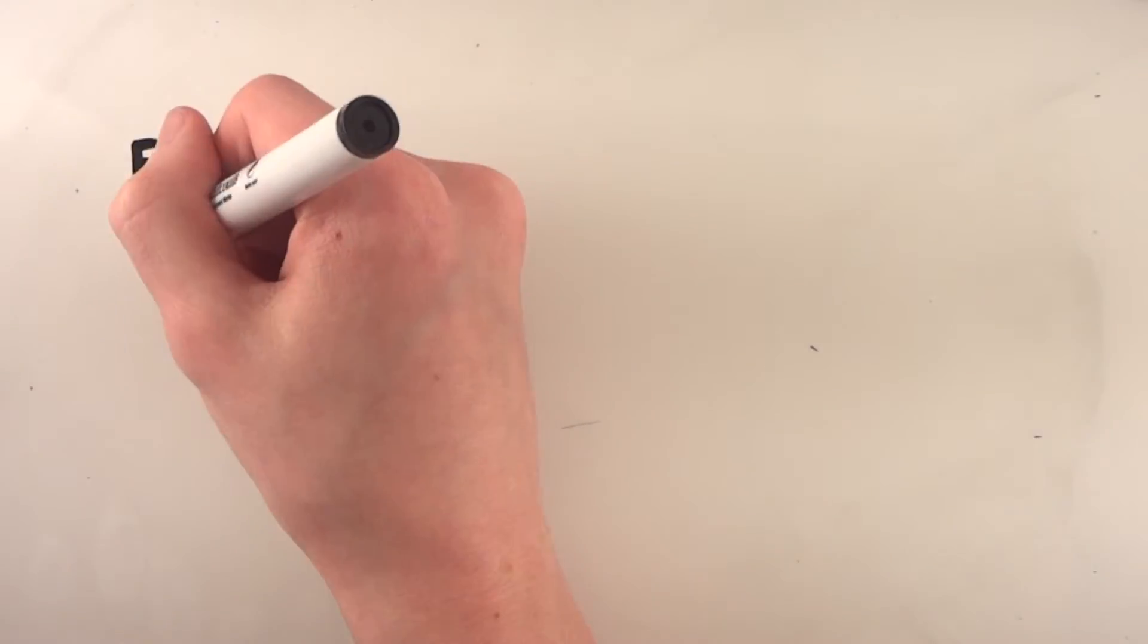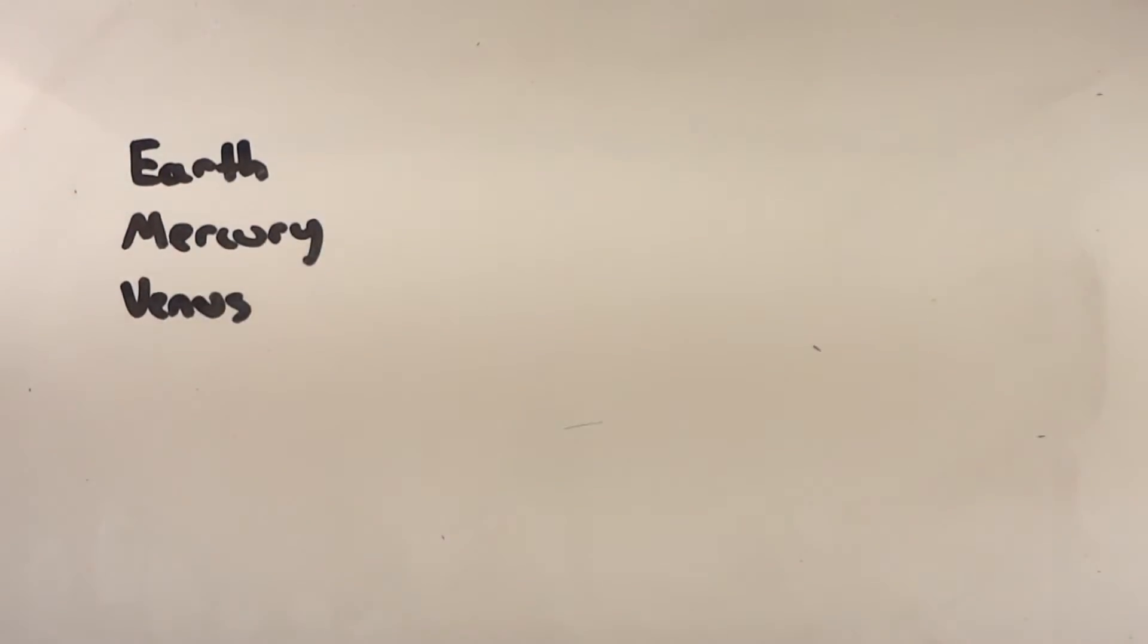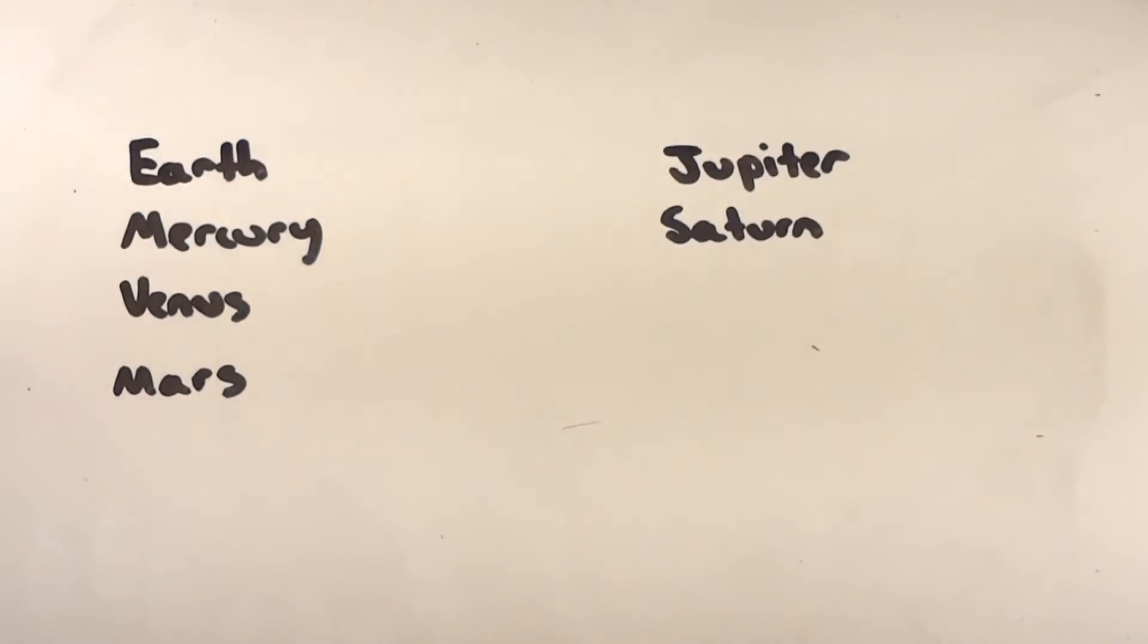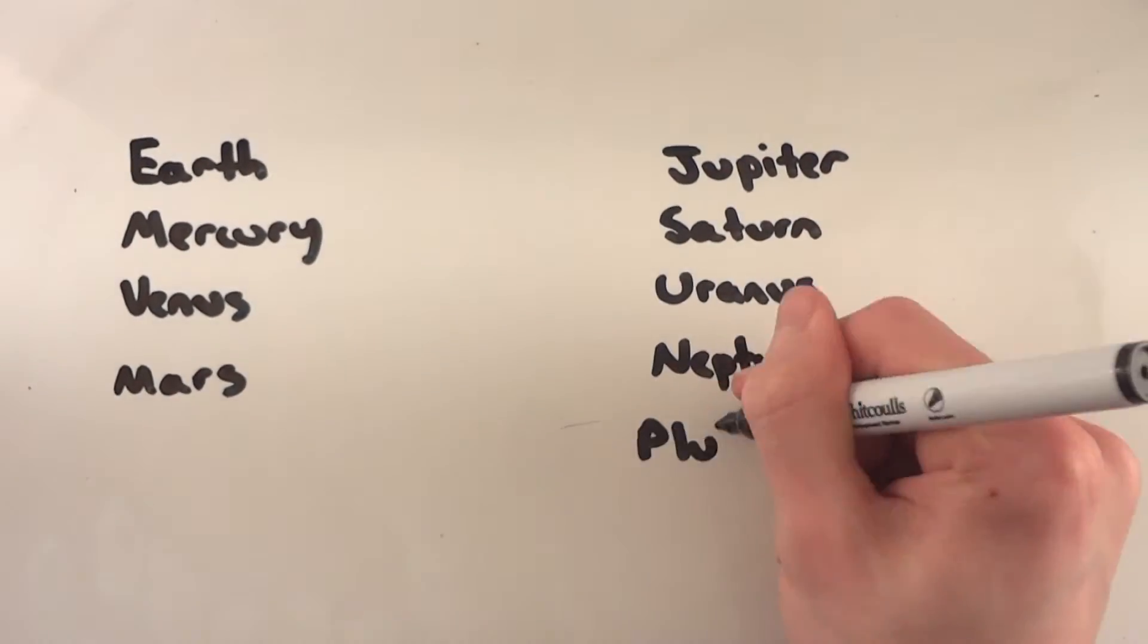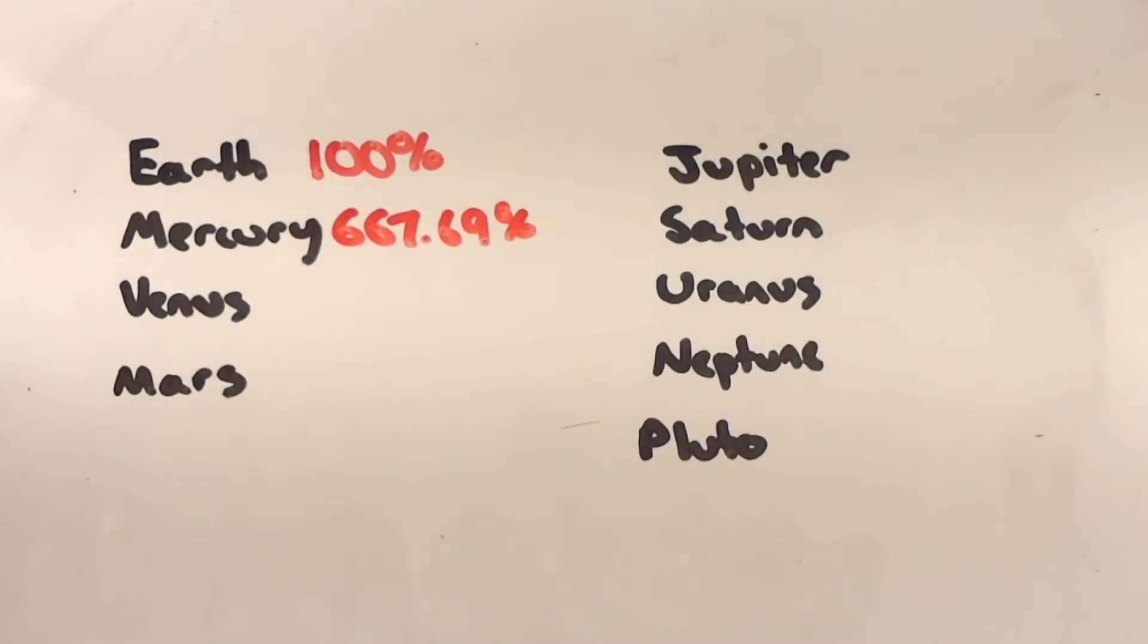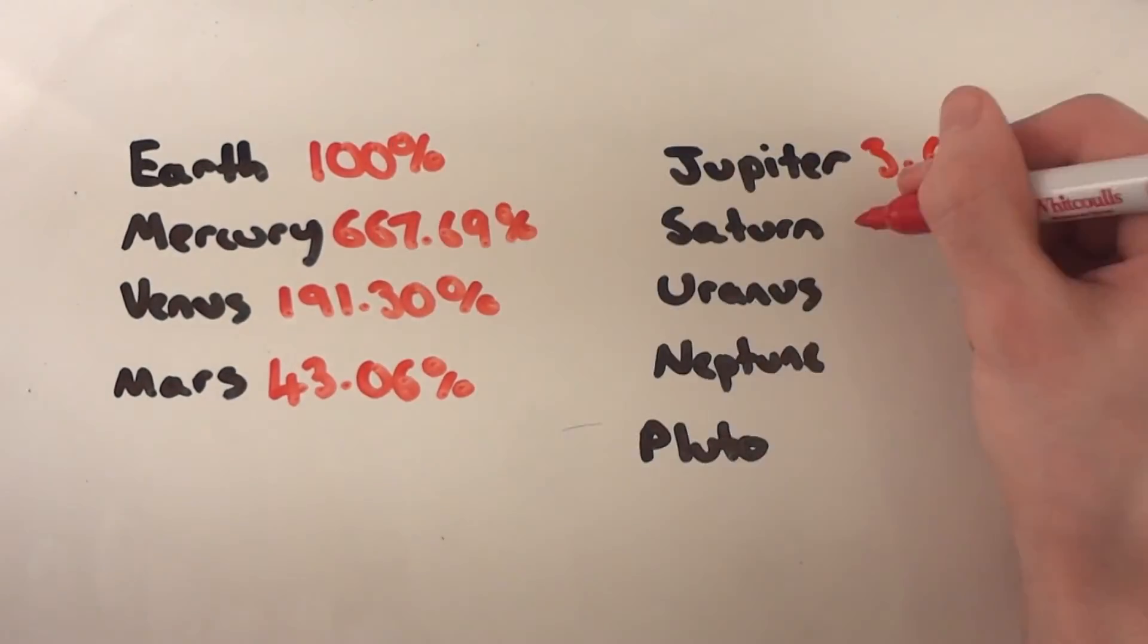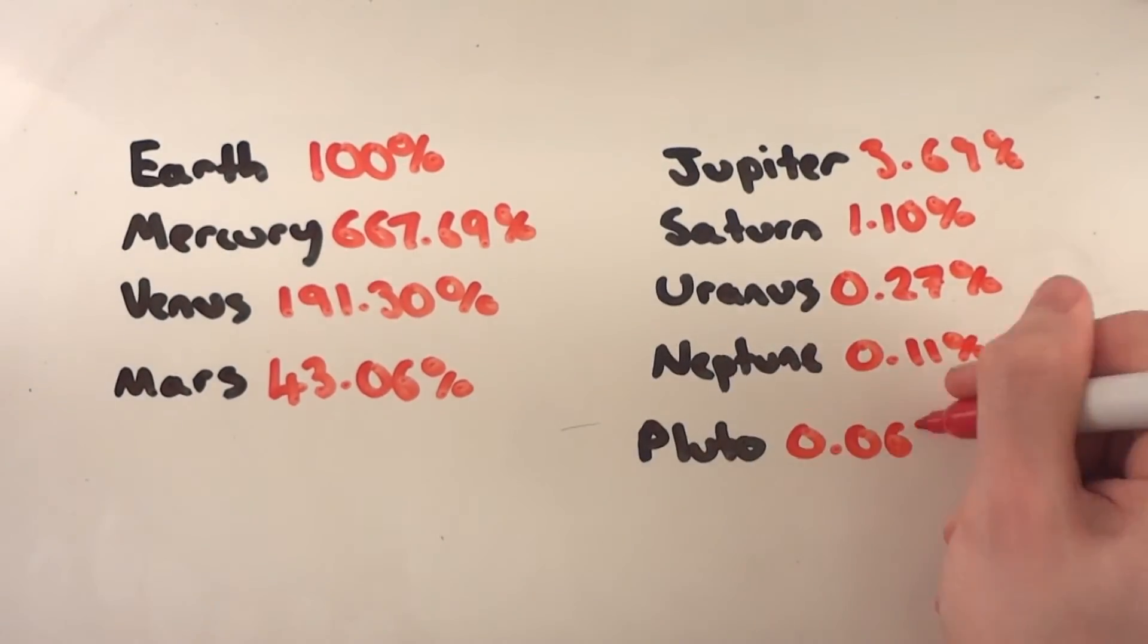So how does this translate when it comes to the solar system? Comparing to Earth, Mercury receives around 667.69% the energy from the sun which the Earth does. Venus is 191.30, Mars 43.06.